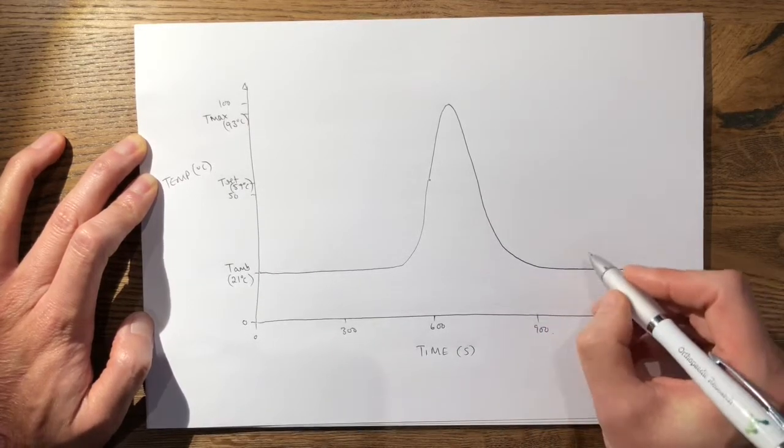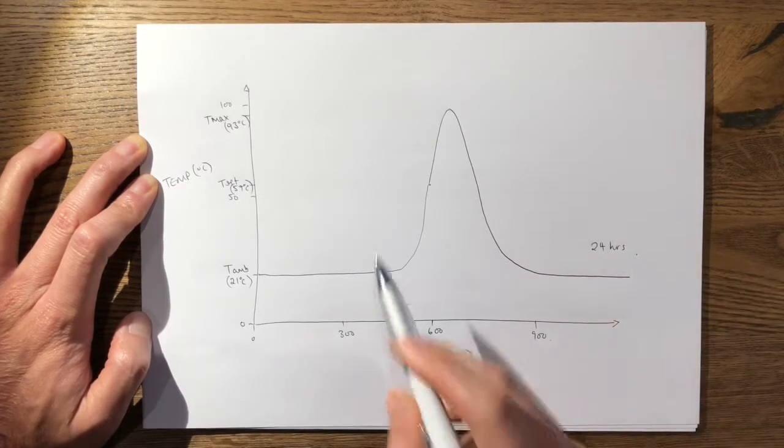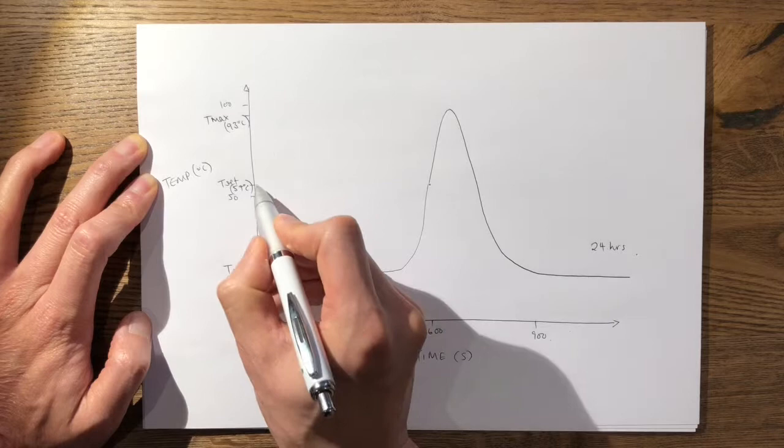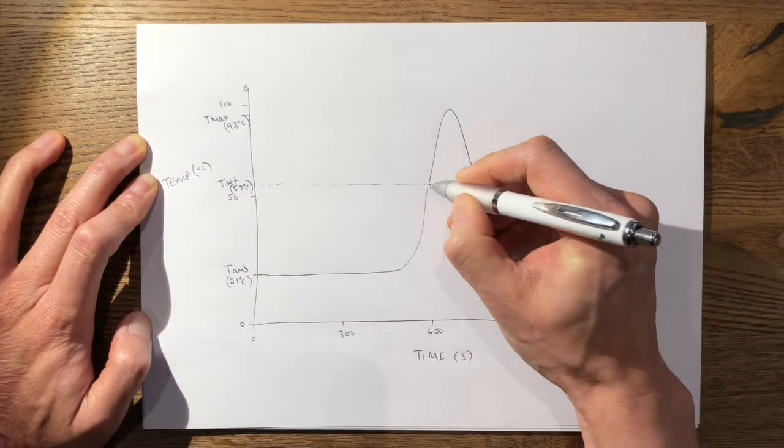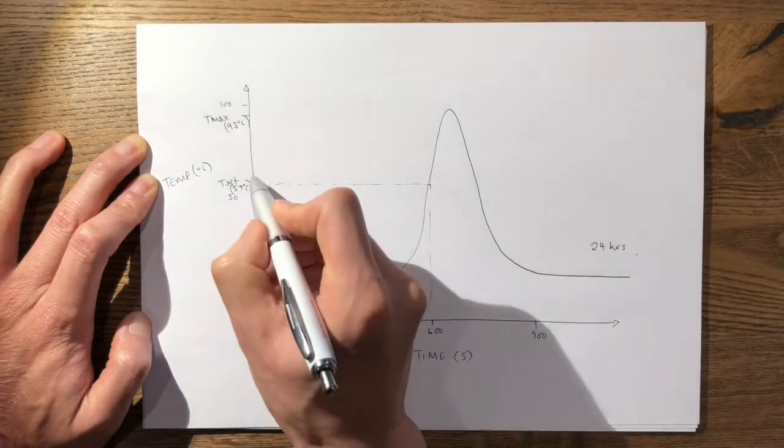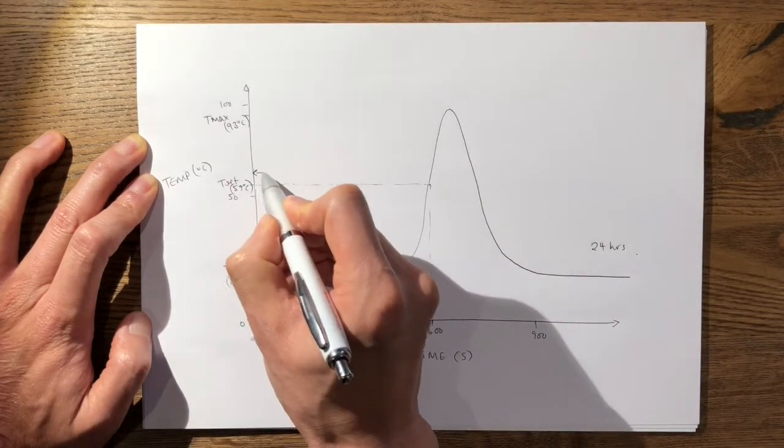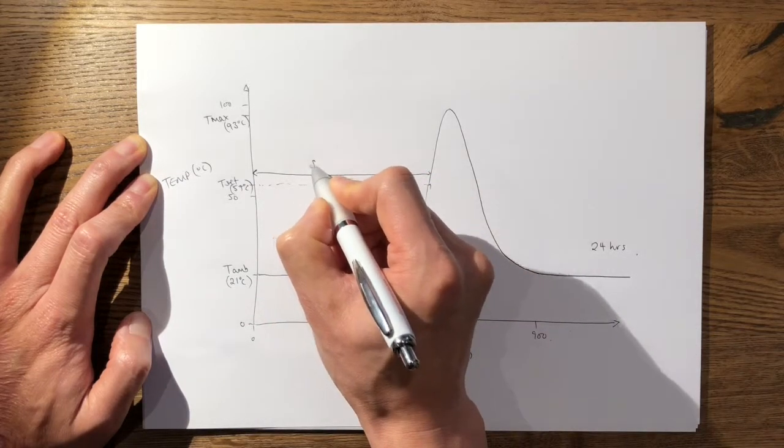From here you can start to label your graph. You know that this point here is your setting time of your cement, so this distance or this time here from there to there is your setting time.